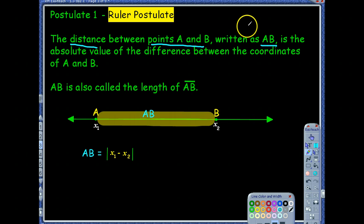So when we talked about a segment AB, we wrote AB with a little segment bar above it. When we're talking about a distance, we write AB, but we do not put a segment bar above it. And it says that the distance between two points written as AB is the absolute value of the difference between the coordinates of points A and B.